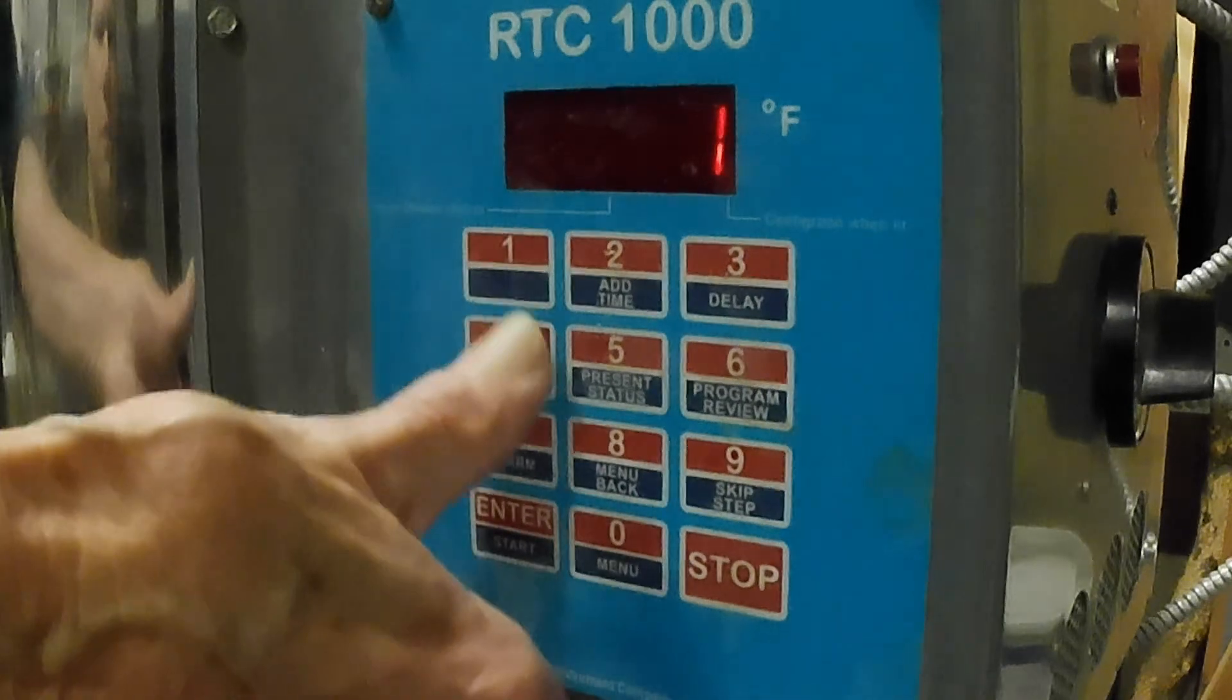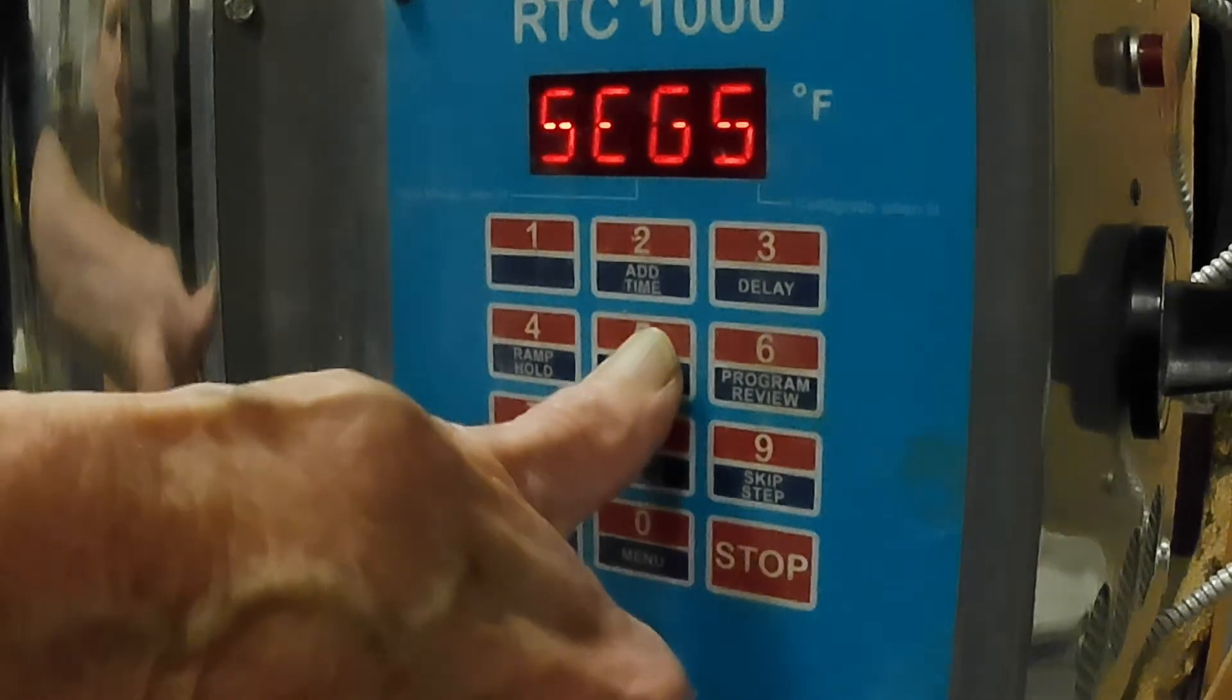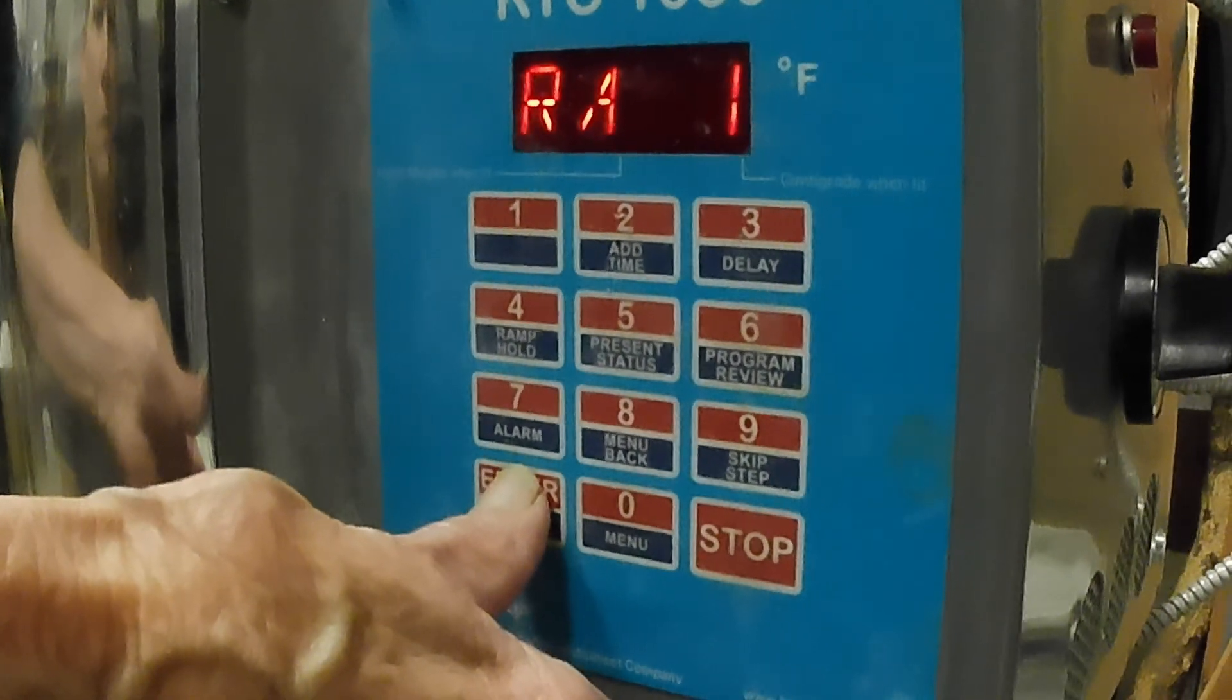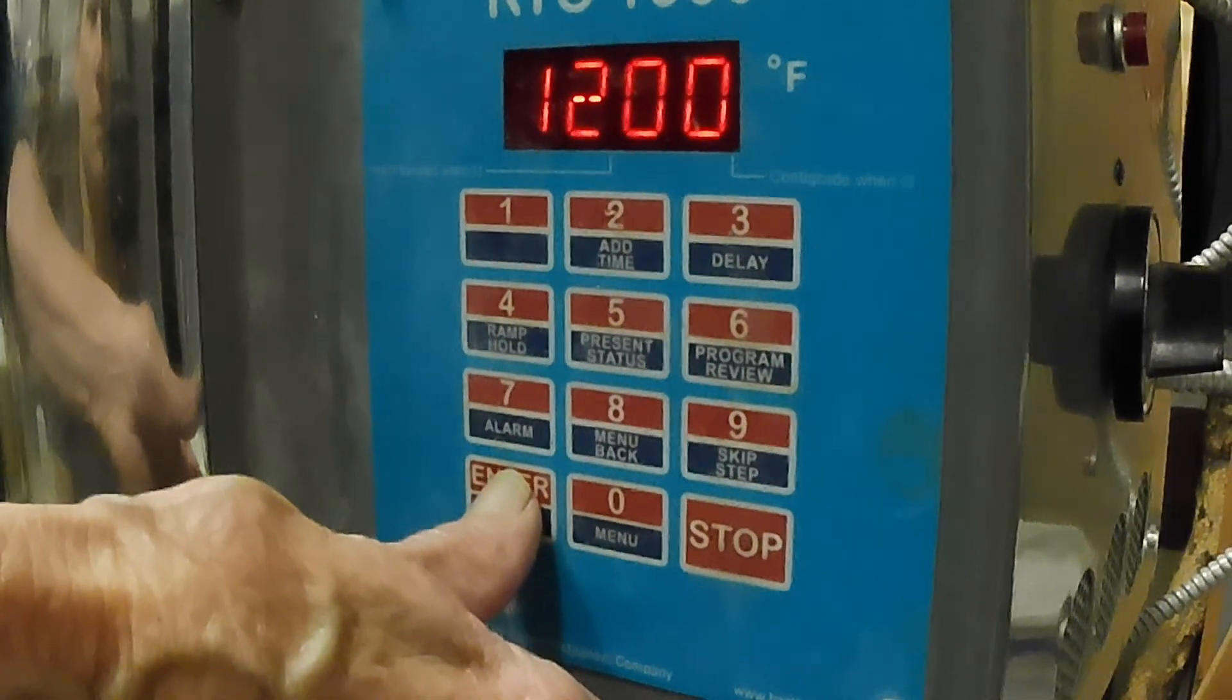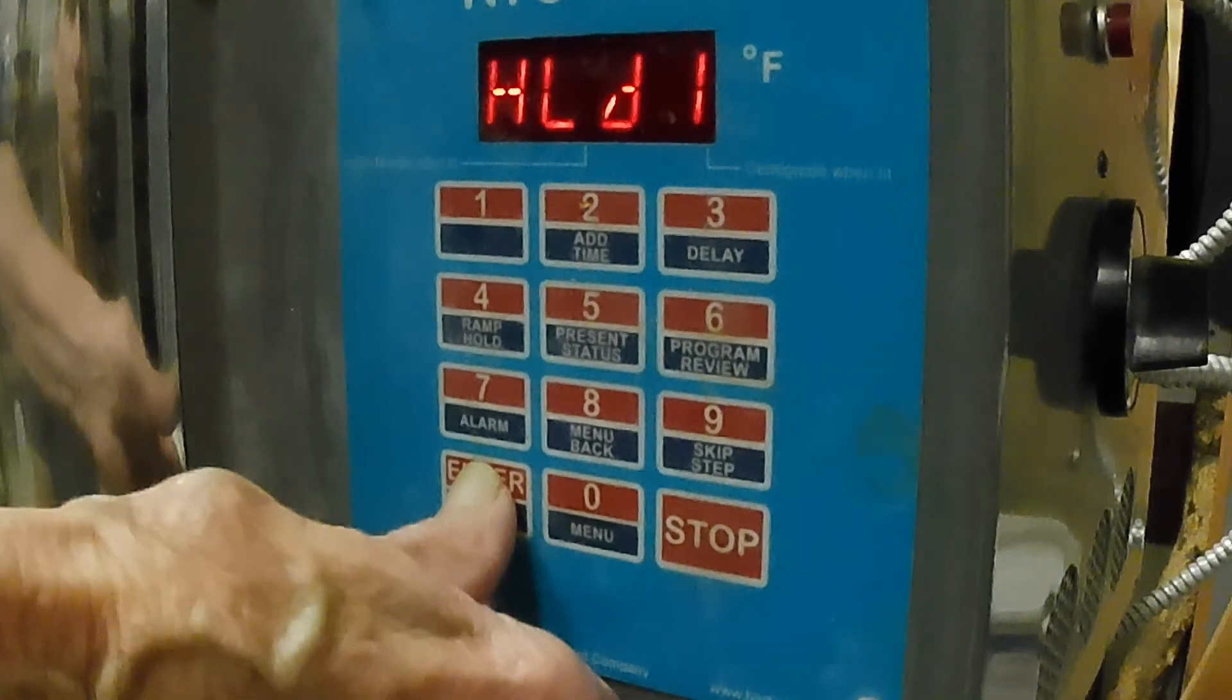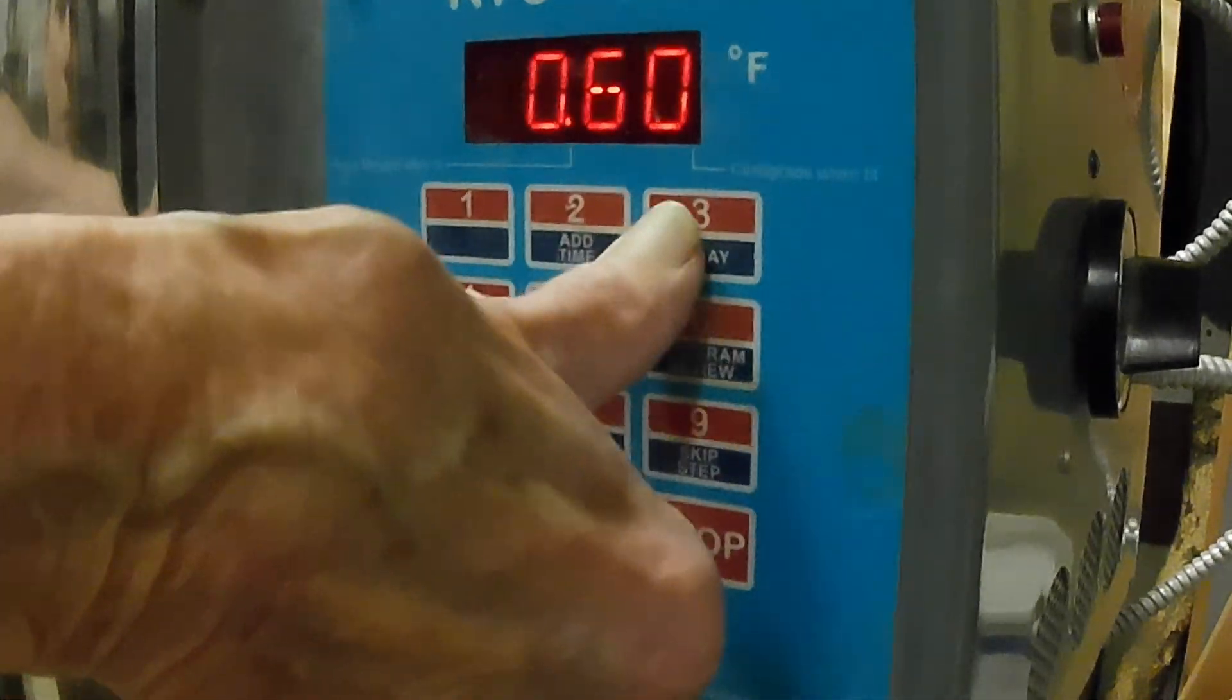User 1, Enter. Segments 5, Enter. Ramp 1, I want 300 degrees and I'm going to take it to 1100 and hold it for 30 minutes.